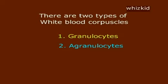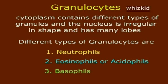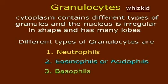There are two types of white blood corpuscles: granulocytes and agranulocytes. In granulocytes, the cytoplasm contains different types of granules and the nucleus is irregular in shape with many lobes. The different types of granulocytes are neutrophils, eosinophils (or acidophils), and basophils.